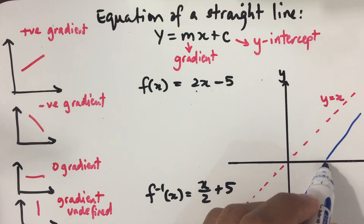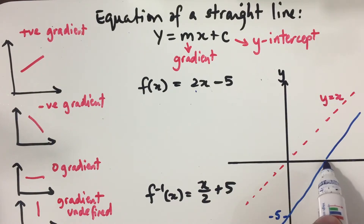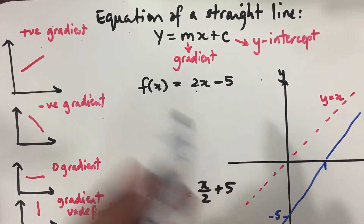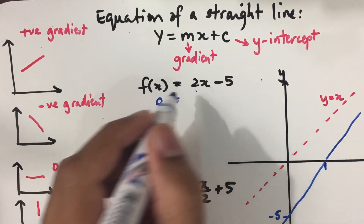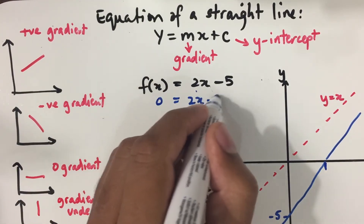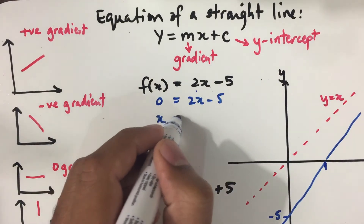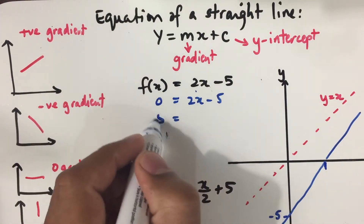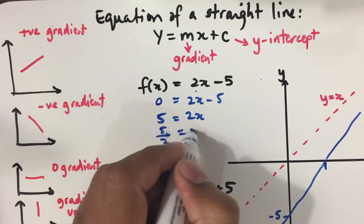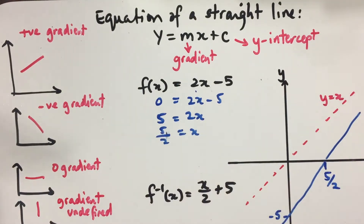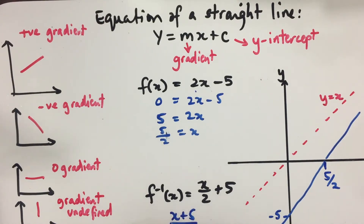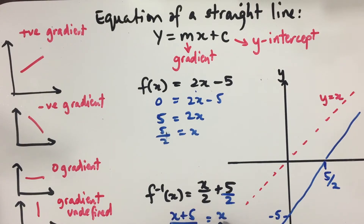To find where f(x) cuts the x-axis, we set f(x) = 0: 0 = 2x - 5, solving gives x = 5/2. Now for f⁻¹(x) = (x + 5) / 2, this is the same as x/2 + 5/2.